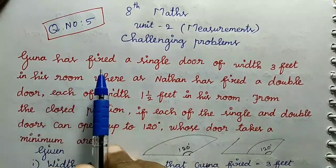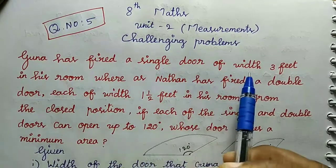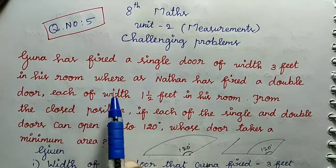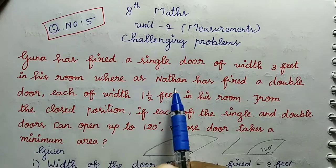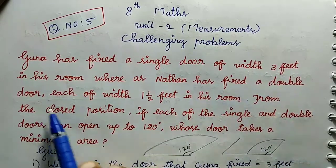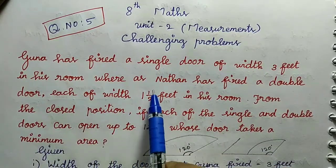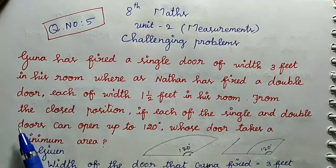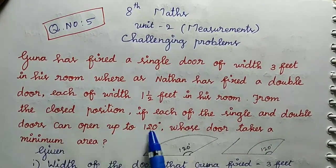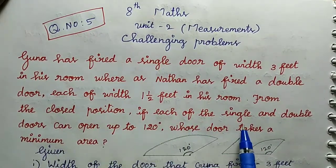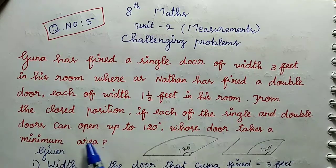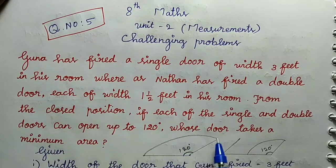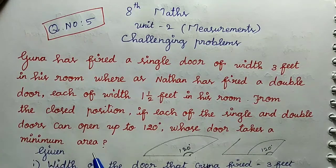Guna has fixed a single door of width 3 feet in his room. Whereas Nathan has fixed a double door, each of width 1 and 1/2 feet in his room. From the closed position, if each of the single and double doors can open up to 120 degrees, whose door takes the minimum area?